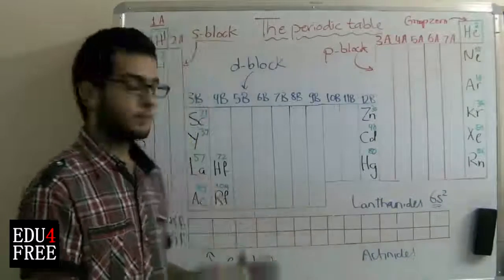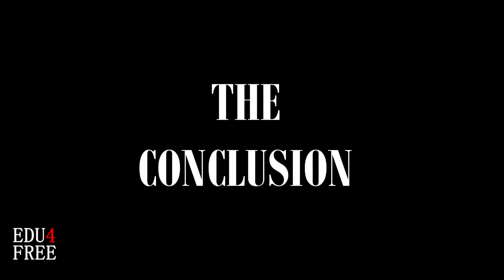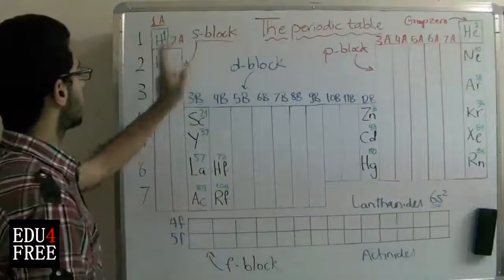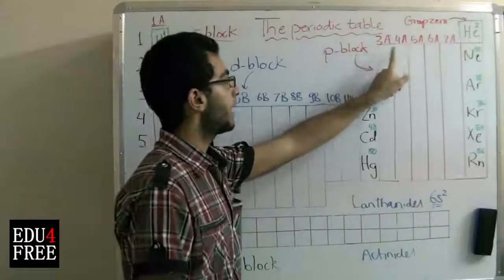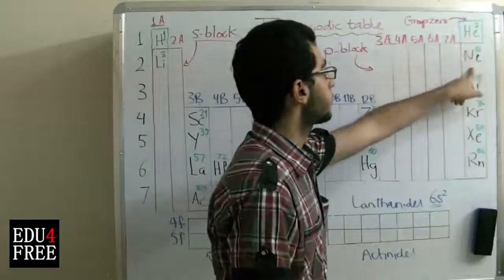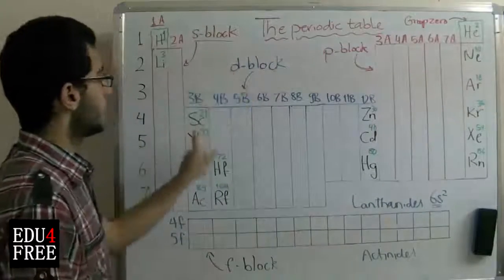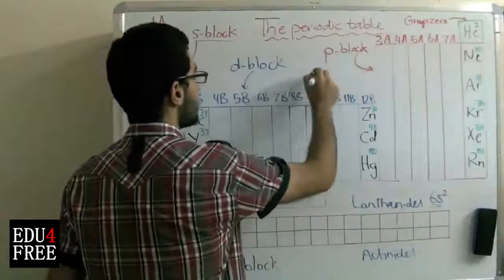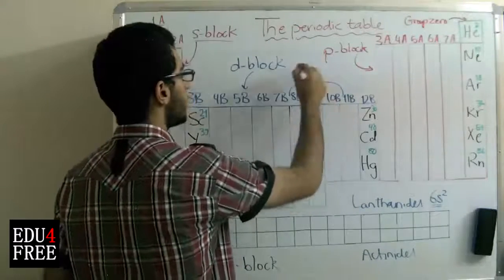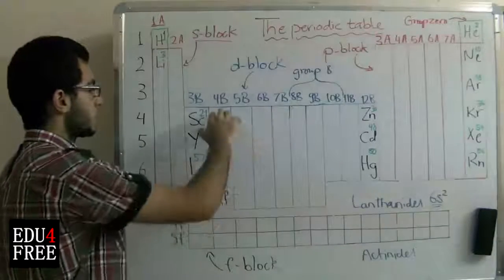The actinides are characterized by their unstable nuclei and high chemical radioactivity. To summarize: the S block contains 2 groups — 1A and 2A. The P block contains 6 groups, beginning from 3A, 4A, 5A, 6A, 7A, and group 0, which contains the inert or noble gases. The D block contains 10 groups, and groups 8B, 9B, and 10B are all called group 8 — the three of them are found under the same group.